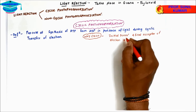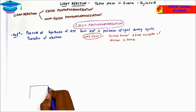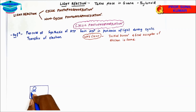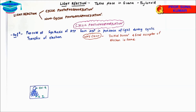To understand cyclic photophosphorylation, we first need to understand what a photosystem is. When drawing a photosystem, we draw a box, and inside the box we draw circles. The bigger circle represents chlorophyll a, while the smaller circles represent accessory pigment molecules.